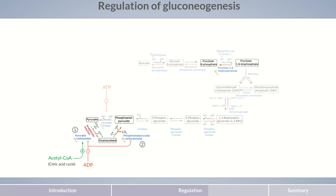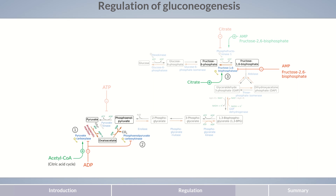Another form of reciprocal regulation is found with the conversion of fructose 1,6-bisphosphate and fructose 6-phosphate. In gluconeogenesis, fructose 1,6-bisphosphatase is inhibited by AMP and fructose 2,6-bisphosphate, while it's activated by citrate. The reverse reaction in glycolysis, catalyzed by phosphofructokinase 1, is activated by AMP and fructose 2,6-bisphosphate but inhibited by citrate. Here, reciprocal regulation means that the same regulators have different effects when acting on enzymes with opposite functions.